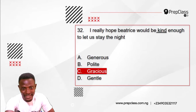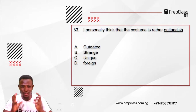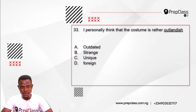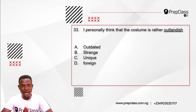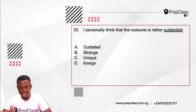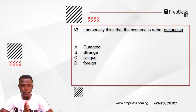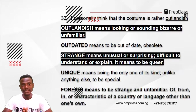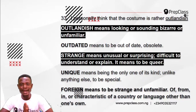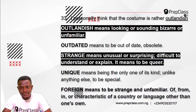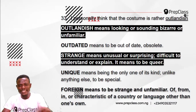Moving on, question 33. We are to select the option nearest in meaning to the underlined word as used in the sentence. Question 33 reads: I personally think that the costume is rather outlandish. The underlined word is 'outlandish.' Options: A: outdated, B: strange, C: unique, D: foreign. The nearest in meaning is strange. Outlandish means looking or sounding bizarre or unfamiliar — if something is unfamiliar it is strange.